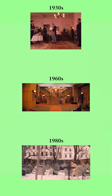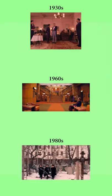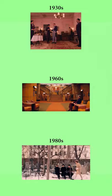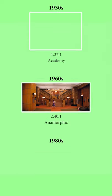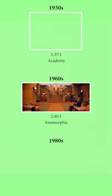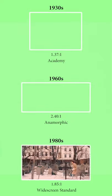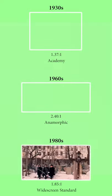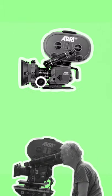To delineate the three different time periods, Anderson used different aspect ratios that were popular photographic formats for each time period: the squarer Academy 1.37 for the 1930s scenes, widescreen 2.40 anamorphic for the 1960s, and 1.85 for the 1980s.